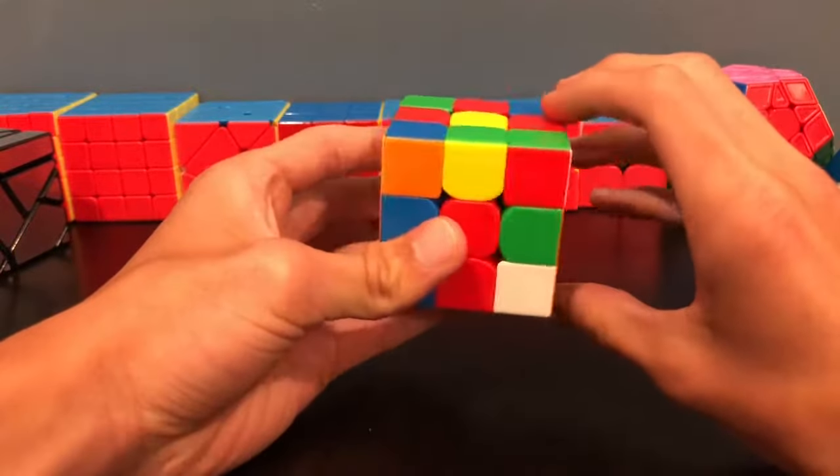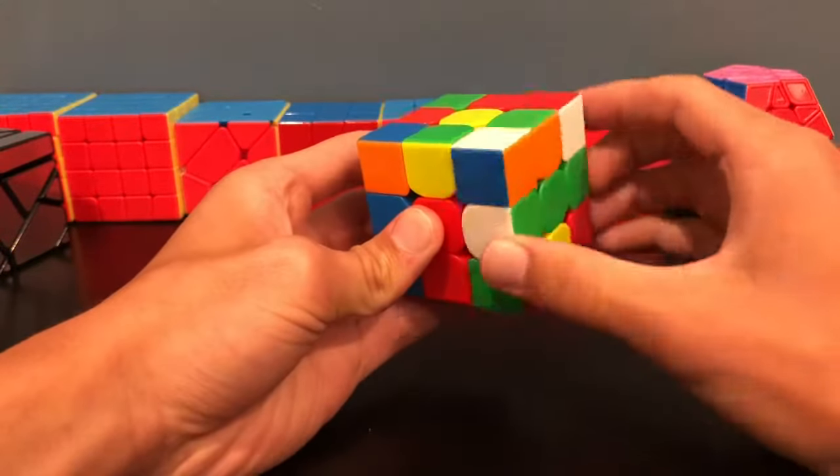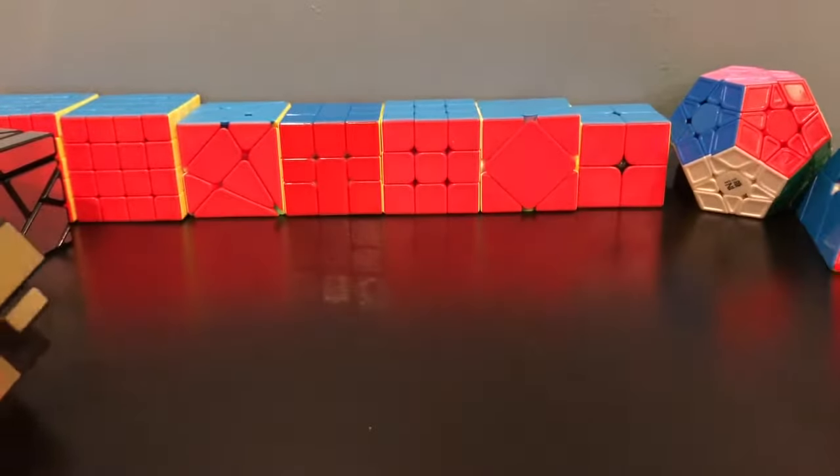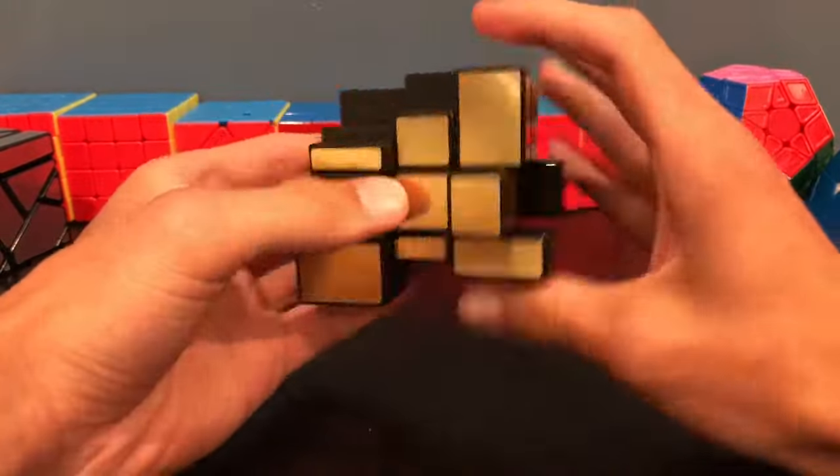The white side is fairly easy to get on a Rubik's Cube because you can easily see which side is white and then bring it down. Now with the mirror cube, at first it's going to take a little bit of guesswork.